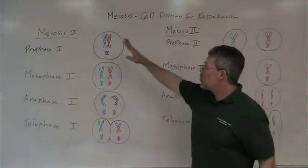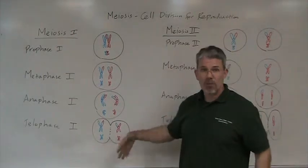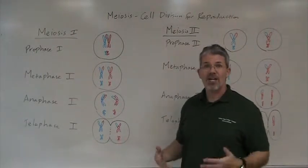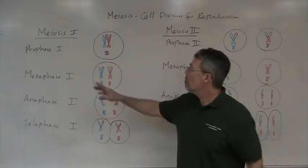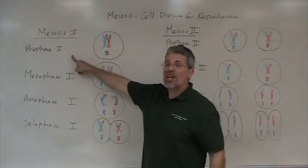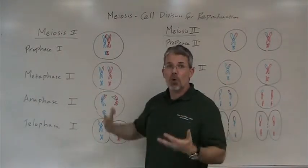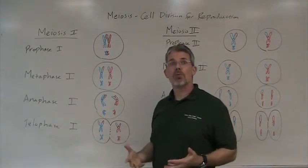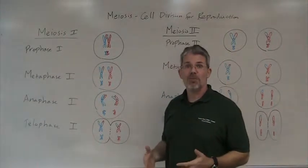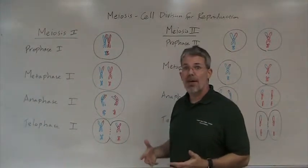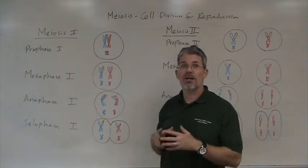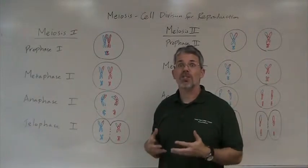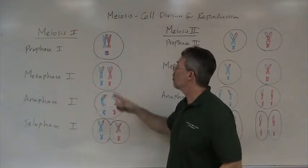Now each one is going to have its prophase, metaphase, anaphase, and telophase. In prophase I, you have the usual prophase events, but something else happens here — a phenomenon known as crossing over.